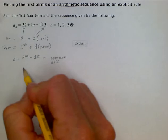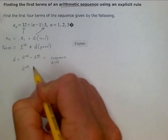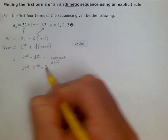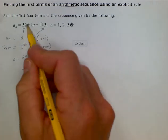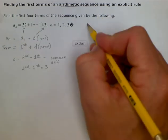So, our common difference, our second minus our first, is going to be equal to 3. And our first term we see already is going to be 32. So, we can put 32 in here.